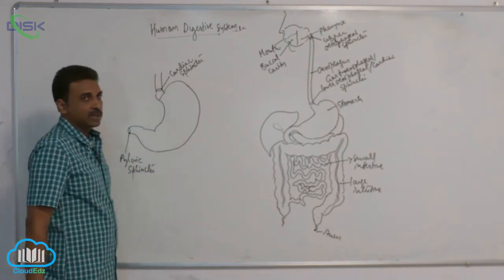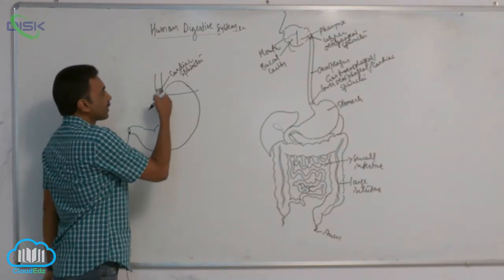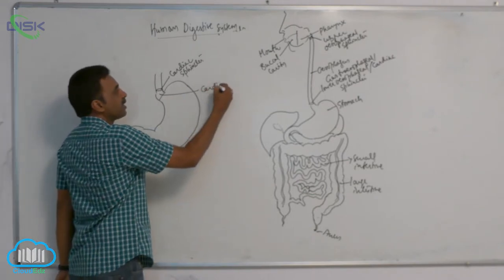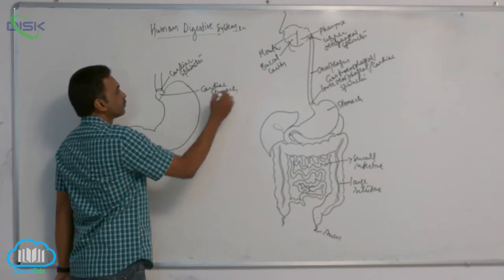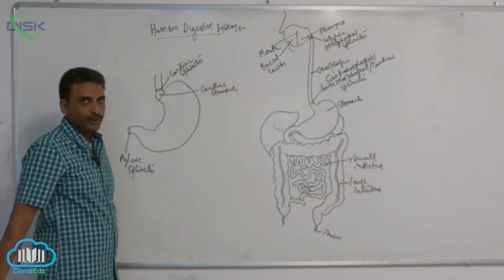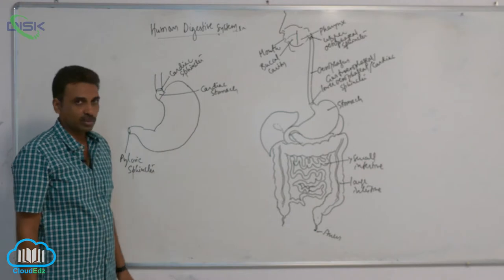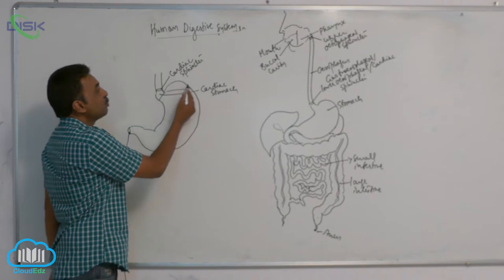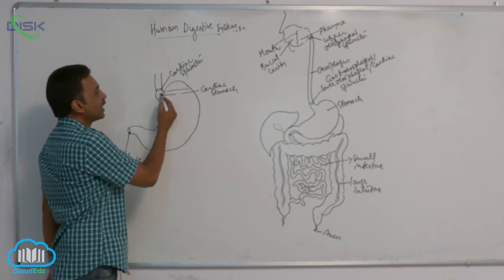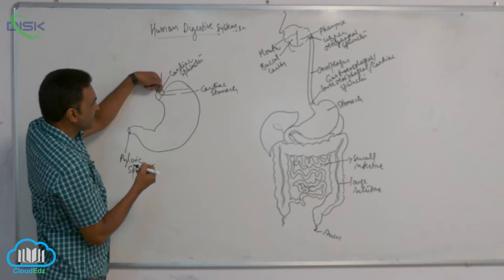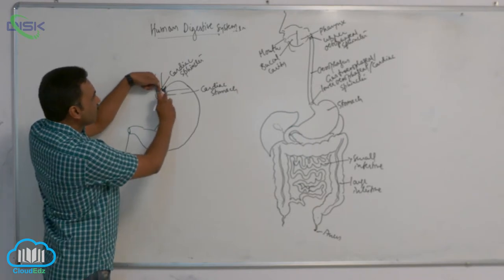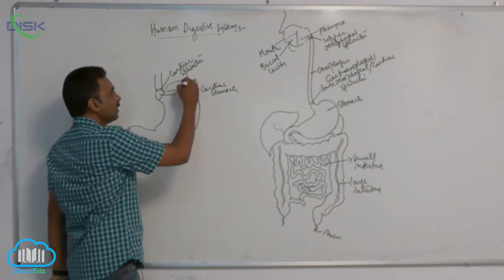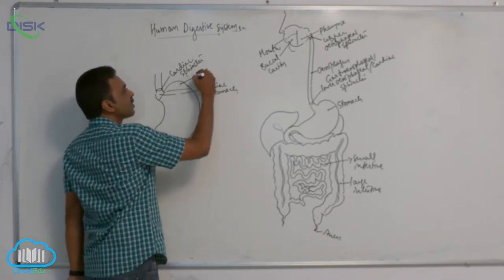The region of the stomach very next to the cardiac sphincter is called the cardiac stomach. And above the esophageal opening, you can see a dome-like structure. This dome-like structure is called the fundic stomach.